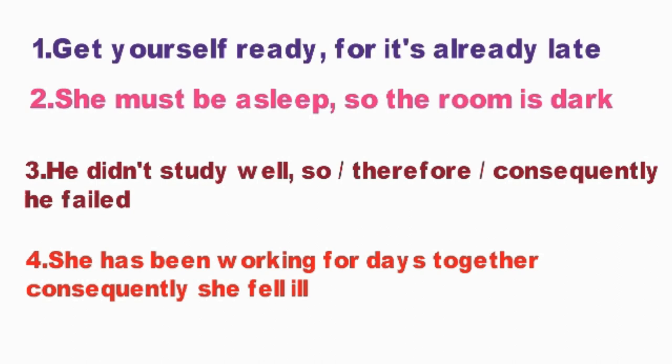If you look at all these examples, you can understand that there is a reason — an inference. We have to understand one statement based on the information given by another. Get yourself ready — why? Because it's already late. That 'for' is an elative conjunction giving reason. She must be asleep — how do you understand? Because the room is dark. Based on another statement or fact.